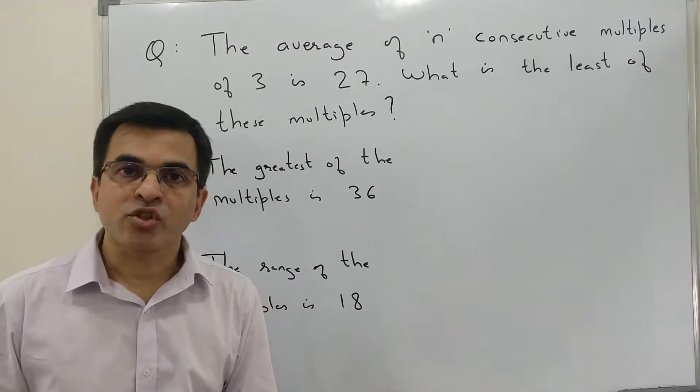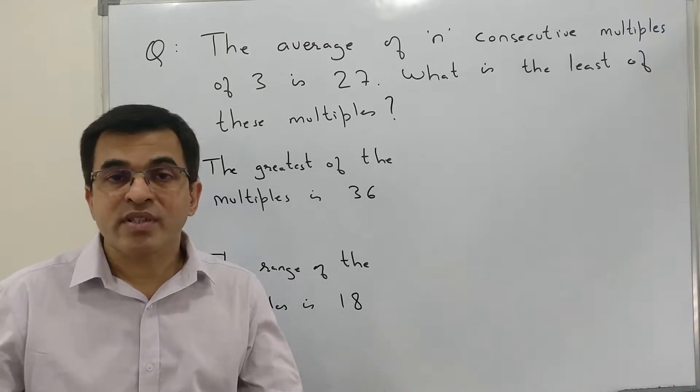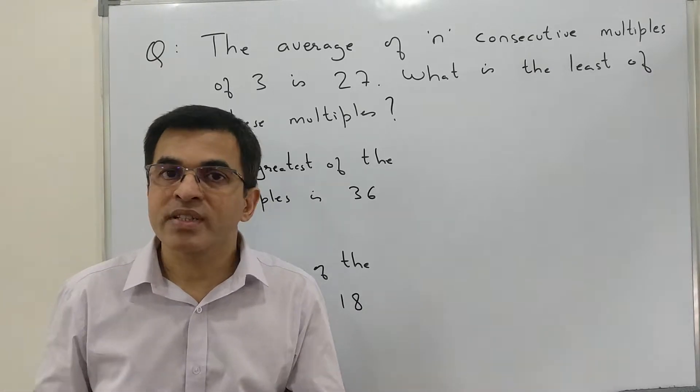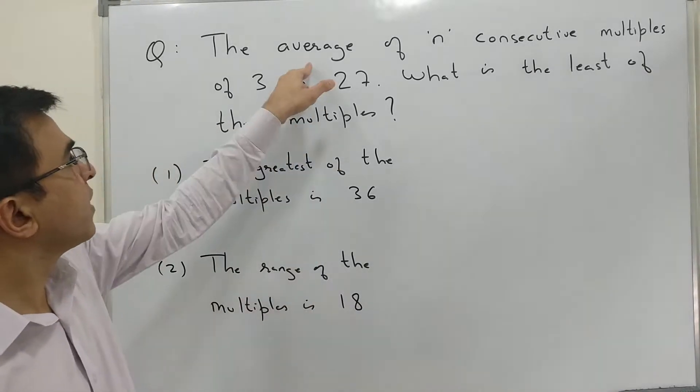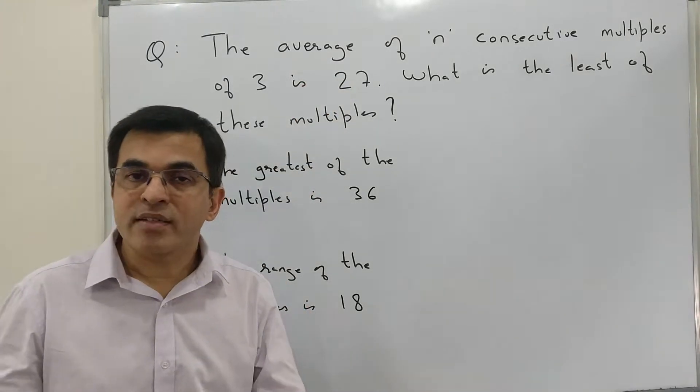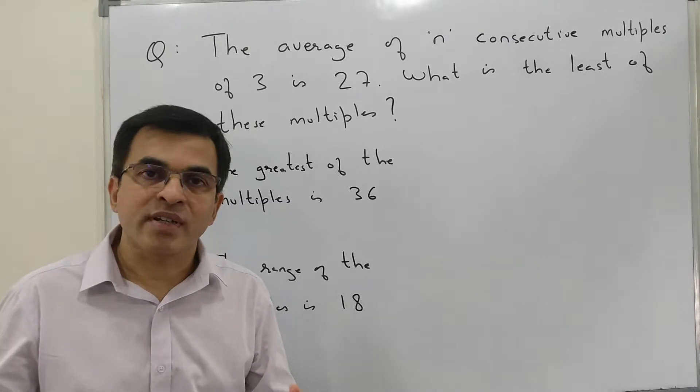Let's take a look at a data sufficiency question which on the face of it seems to be an averages or statistics-based question. There are some words clearly appearing - the word average appears here, and another word range appears here. This seems to be just an average or statistical measure based question.